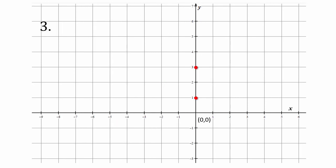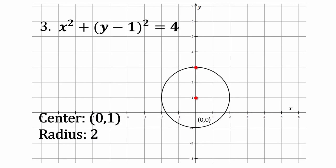For number 3, the center of the circle must be on (0, 1). The radius is 2 units. This is the graph of x² + (y - 1)² = 4.